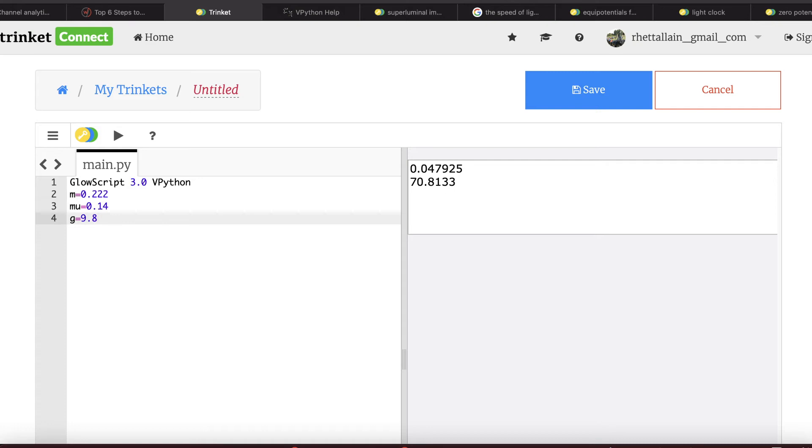So now I can just go ahead and solve for Fp. I'm just typing my equation here: m times g times sine theta minus mu times cosine theta, all of that divided by mu times sine theta plus cosine theta. And then I got the parentheses matched up.